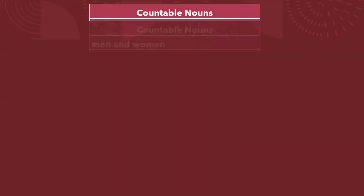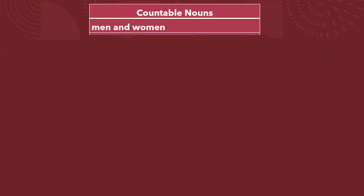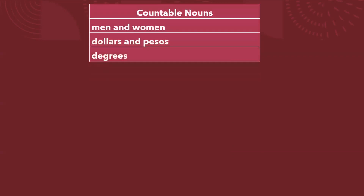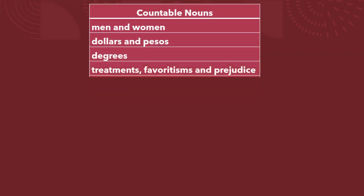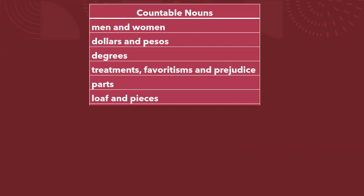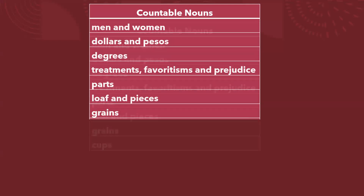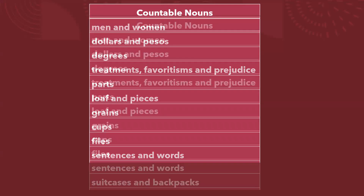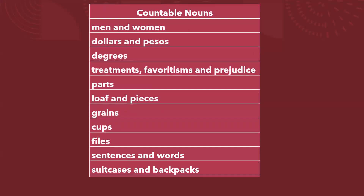Countable nouns: if we talk about people as population, we can talk about men and women, dollars and pesos, degrees, treatments, favoritisms and prejudice, parts, loaves and pieces, grains, cups, files, sentences and words, suitcases and backpacks, chairs and tables.